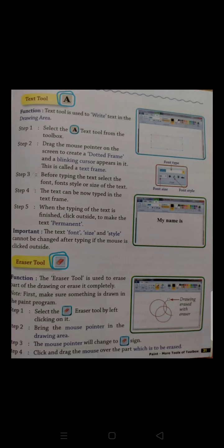The first step is to select the text tool from the tool box. We select the text tool from the tool box. Step 2. Drag the mouse pointer on the screen to create a dotted frame. We drag the mouse pointer on our screen and create a dotted frame.